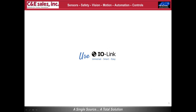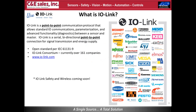Good morning, everybody. Thank you, Jeff, for that introduction. Today we're going to be talking about IO-Link. So what is IO-Link? IO-Link is a serial, bi-directional, point-to-point protocol. It allows not only IO data communication, but also parameterization and diagnostics data to be transferred between the sensor and the master.